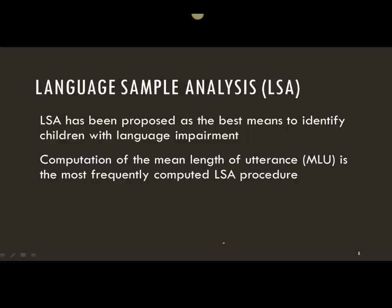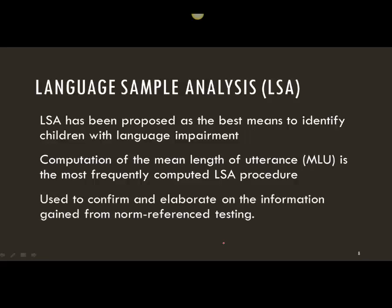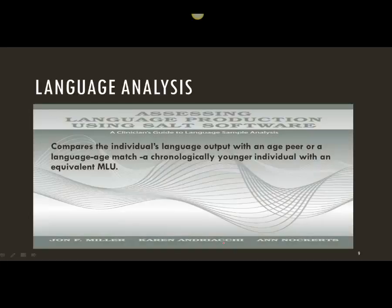Review the textbook and review your previous notes. Language sample analysis is a great measure to use to confirm and to elaborate — that is, to expand the information gained from a norm-referenced test. When we use SALT, we get different measures: the MLU, number of different words, type-token ratio, and we can compare the performance of the child to age peers.